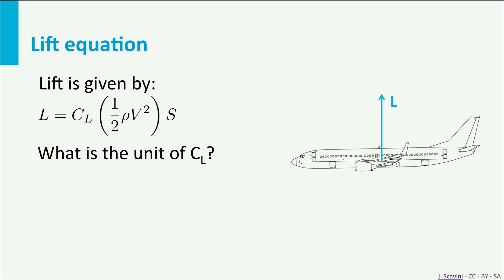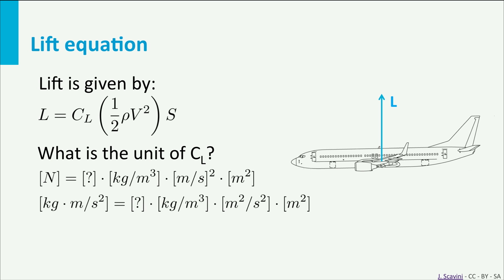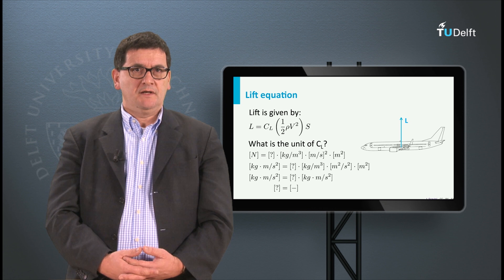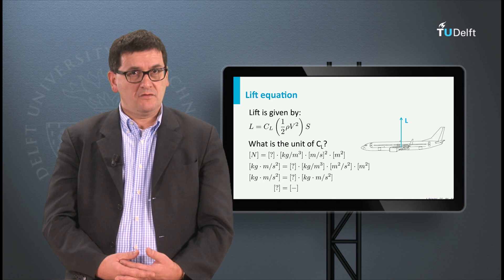In our case we can fill in the known dimensions of the parameters. First we use a question mark for the lift coefficient. On the left hand side we see newtons, and on the right hand side we see kilograms per cubic meter times meters per second squared times meters squared. First we replace newtons by kilograms times meters per second squared. Next we eliminate as much as possible on the right hand side. It happens to be that in the end the lift coefficient has no dimension.